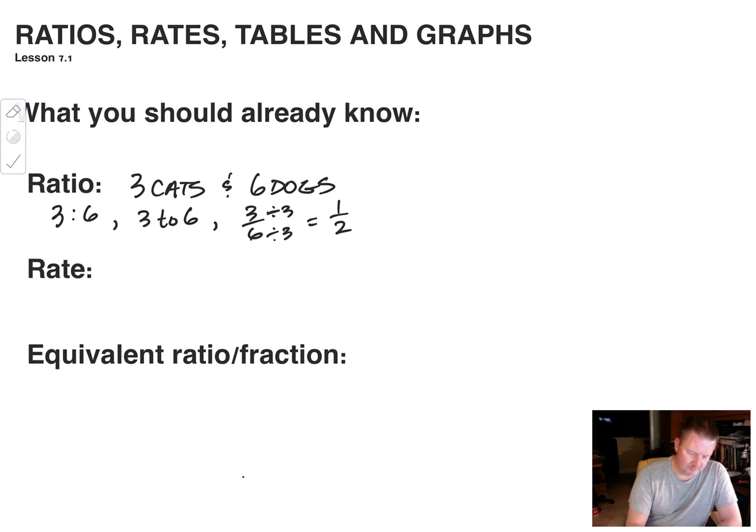We travel 300 miles in five hours. Okay. So we can write that as a fraction, as a ratio, say 300 miles in five hours. All right. And then there's a special way we can write that as a unit rate.